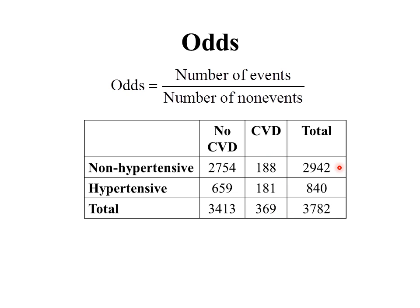A total of 2,942 of them did not have hypertension, and 840 of them did have hypertension. 2,754 non-hypertensives did not have cardiovascular disease, and 188 non-hypertensives did have cardiovascular disease.